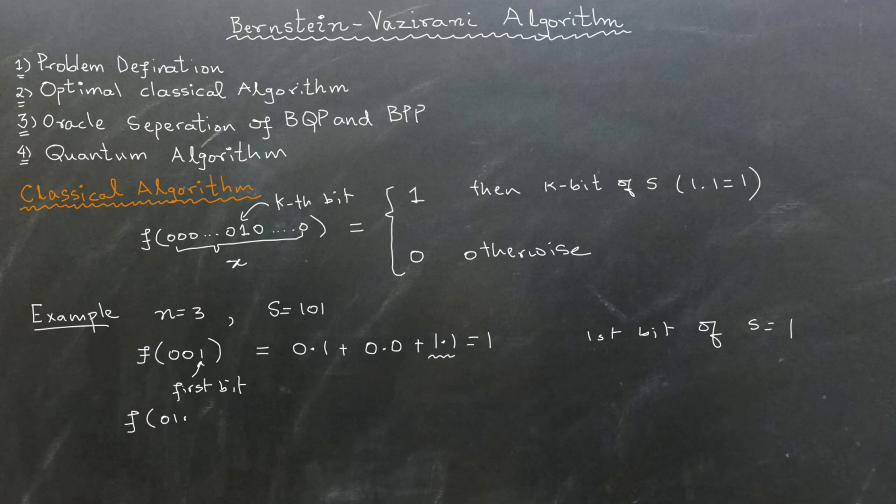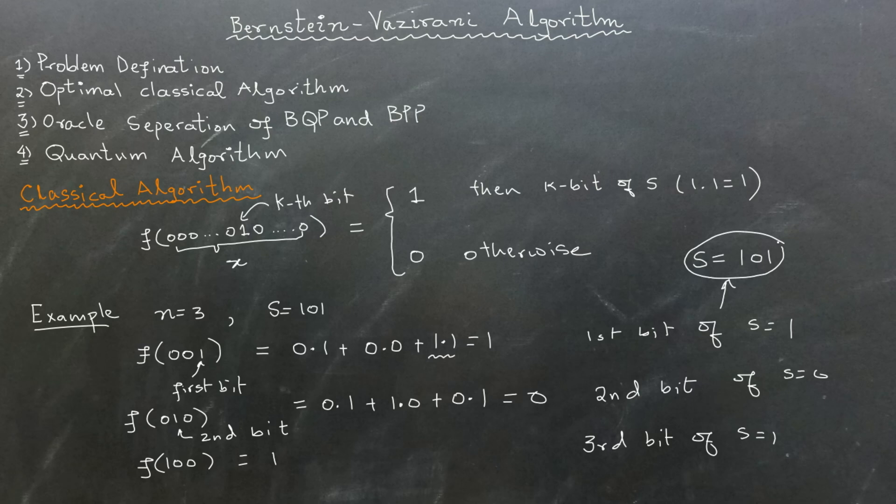Then we send f of 010. The second bit is 1 whereas the other bits are all 0s, which gives us 0 AND 1 plus 1 AND 0 plus 0 AND 1, and this is equal to 0, implying that the second bit of s is 0. Finally, we send f of 100, which gives us an output of 1, indicating that the last bit of s is 1. Thus, our secret string s is revealed to be 101.